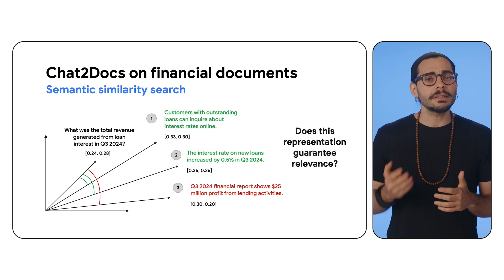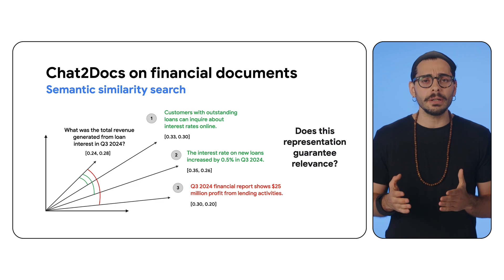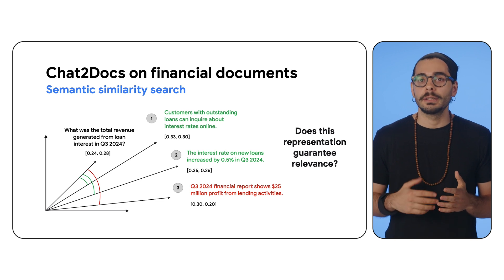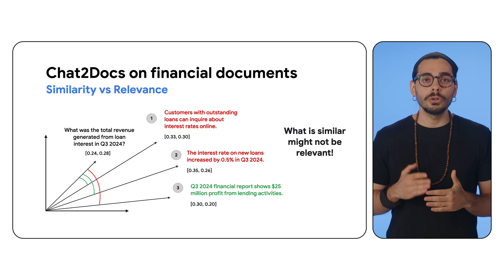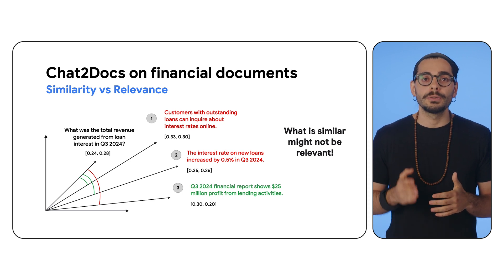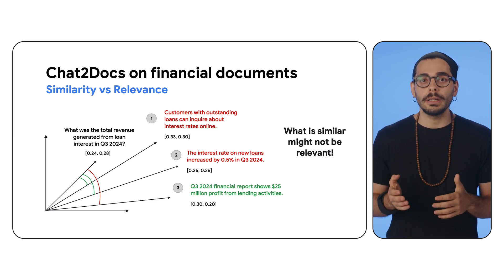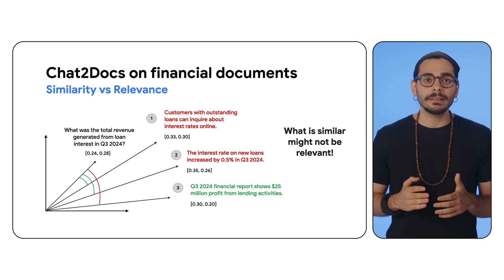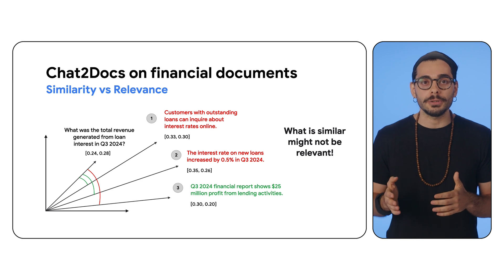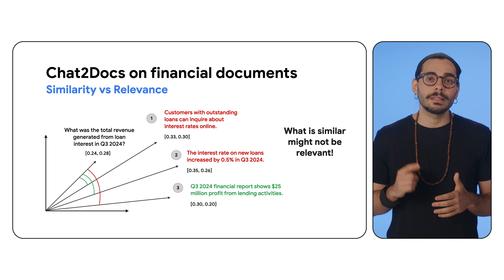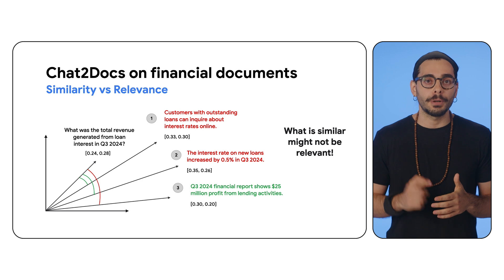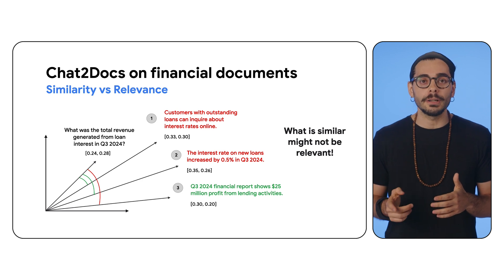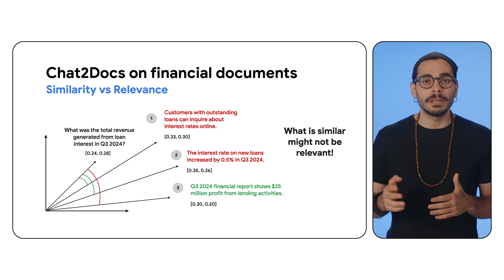So, is this representation relevant to answer the question? The answer is no. This happens because although documents 1 and 2 use similar words to the query, they lack the crucial total revenue information. Document 3, despite different vocabulary, provides the answer — 'profit' interpreted as revenue here — but its embeddings do not fully capture this meaning.